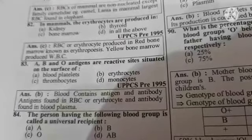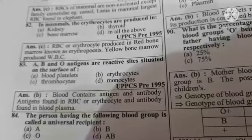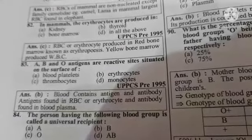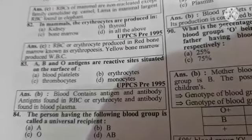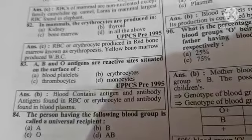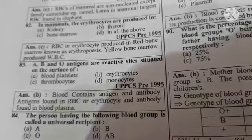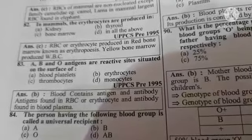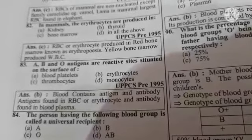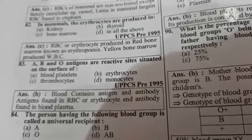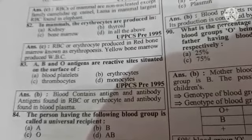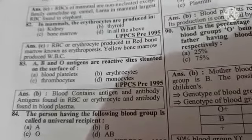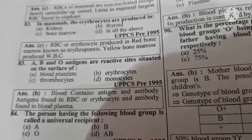Next question: the person having the following blood group is called a universal recipient — Option A: A, Option B: B, Option C: O, Option D: AB. The correct answer is Option D: AB blood group.